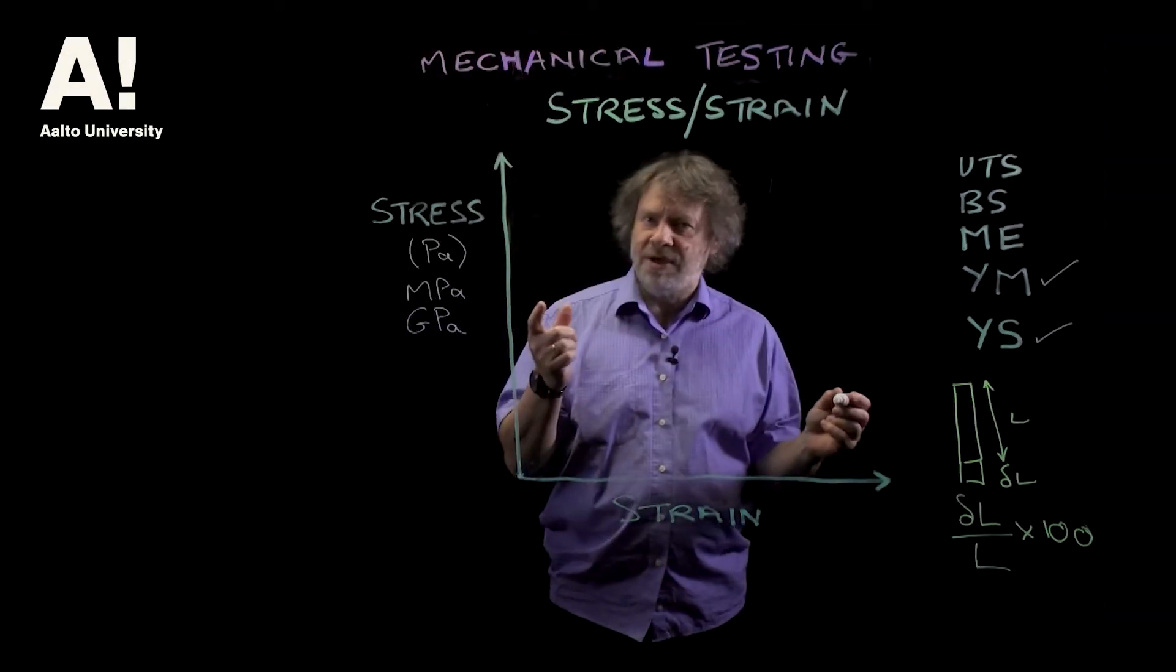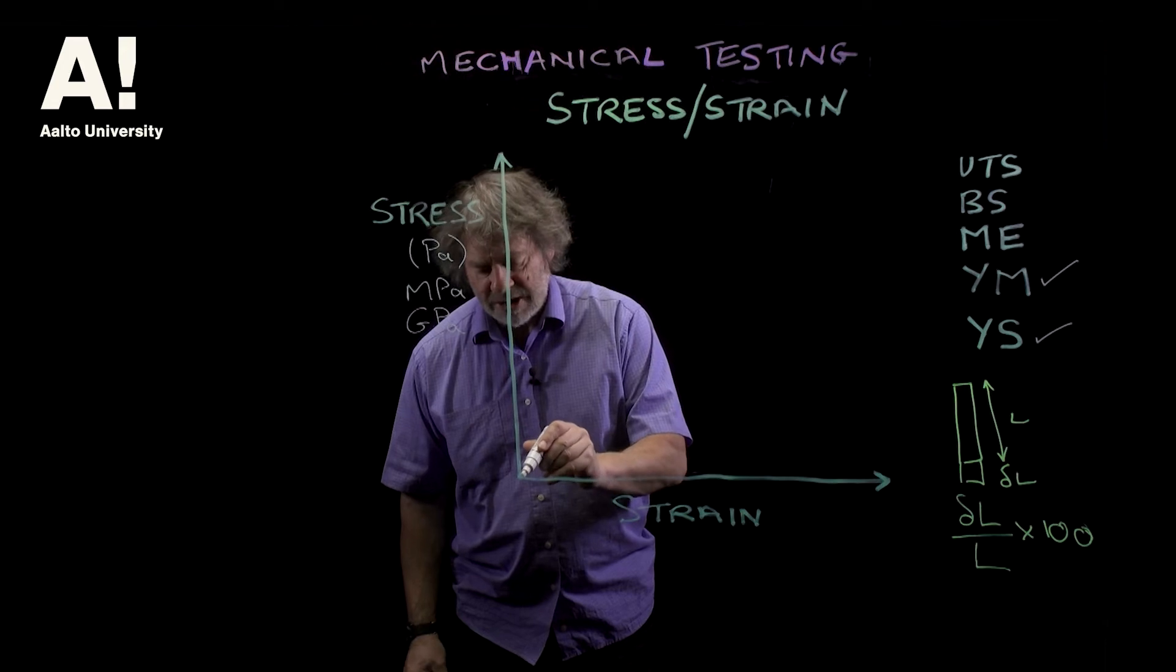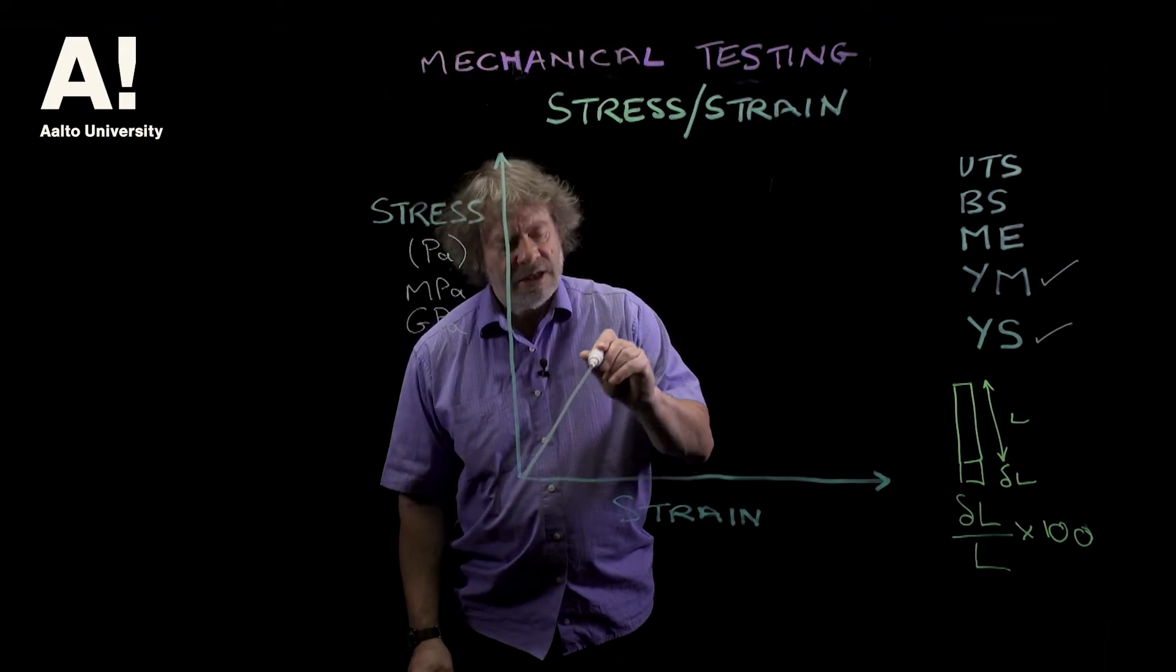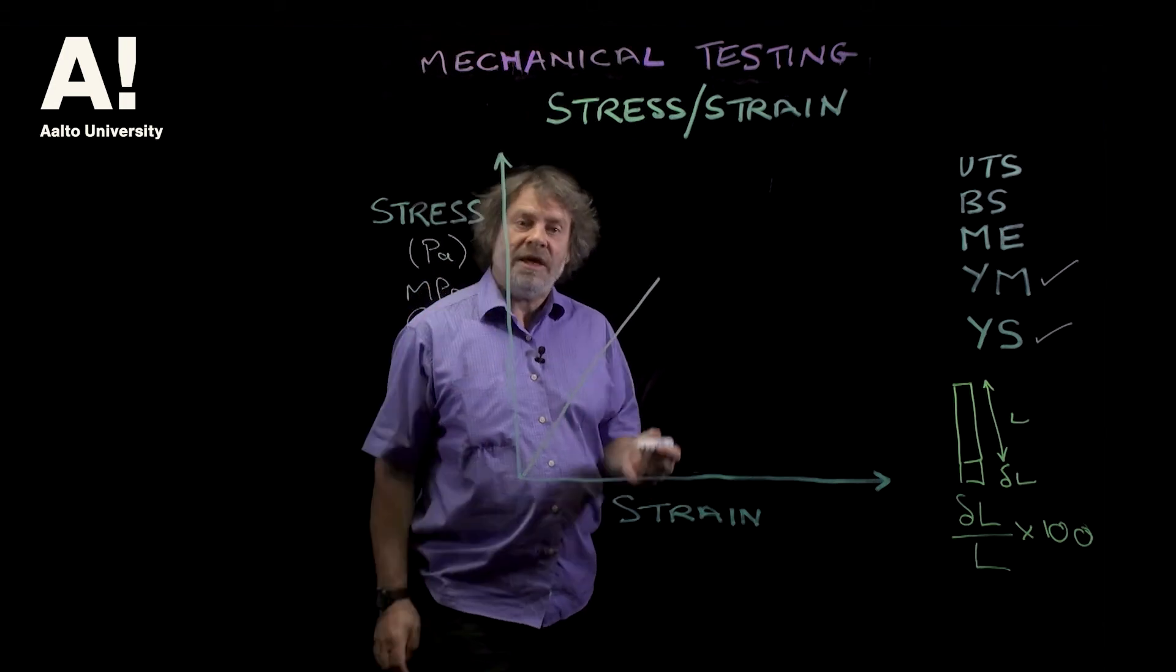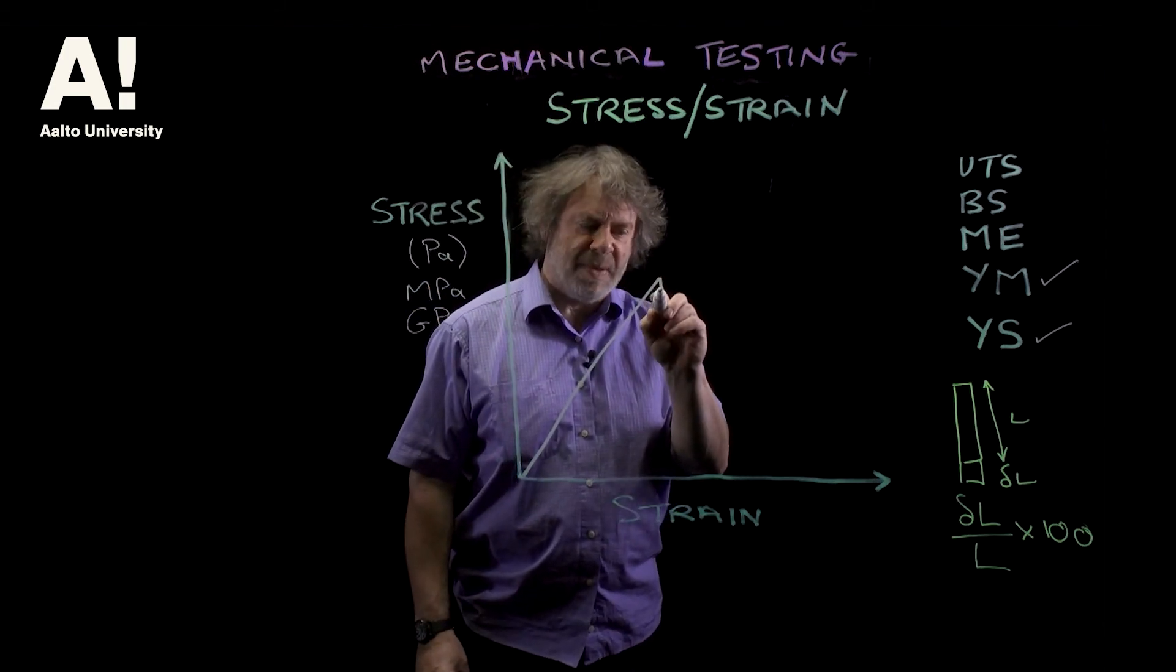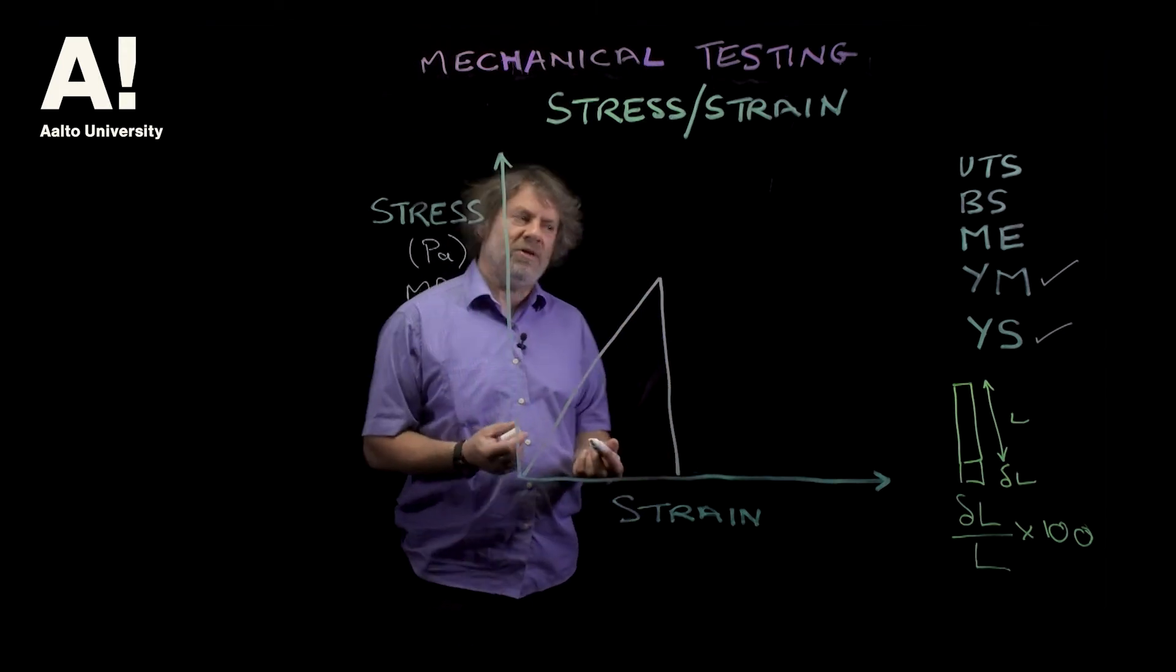Okay, so a bit more about stress-strain curves and material properties. You can have a material that is very linear in its behavior, very hooky in its behavior, and then when it comes to failing it just goes bang like that. And that is characteristic of a very brittle material.